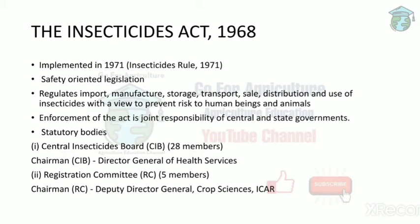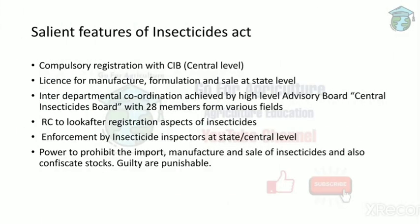The Insecticides Act is a safety-oriented legislation to ensure that insecticides being imported or exported are handled with proper precautions. It regulates import, manufacture, storage, transport, sale, distribution, and use of insecticides with the aim of preventing risk to human beings and animals. The act is enforced by central and state governments. There are statutory bodies like the Central Insecticides Board, or CIB, with 28 members including a chairman, Director General of Health Services, and five members from ICAR crop sciences.